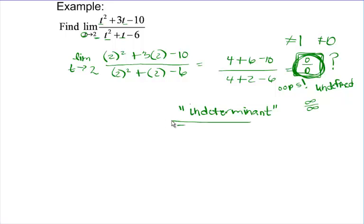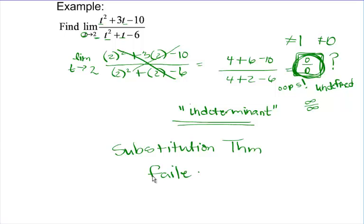So as soon as we encounter 0 over 0, and we may even see in our calculus work infinity over infinity, it's an indeterminate form, which means you can't just use the substitution theorem. So the substitution theorem in this case failed. Write that in your notes. The substitution theorem for evaluating limits failed. So now we need to continue on down that list. One of the things on that list was factor and cancel.